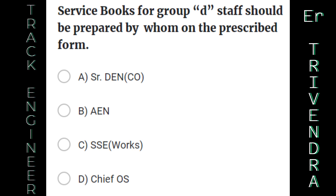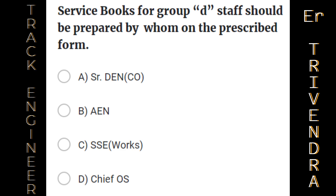Service books for Group D staff should be prepared by whom on the prescribed form? A. SR Divisional Engineer Coordination. B. AEN. C. SSE (works). D. Chief OS. The right answer is: SSE (works).